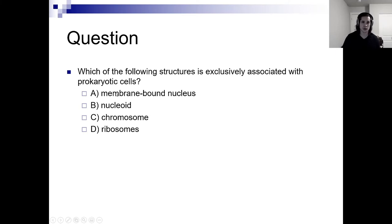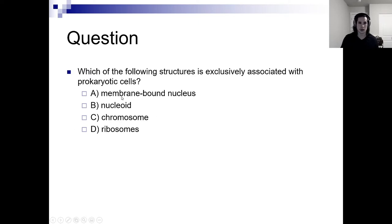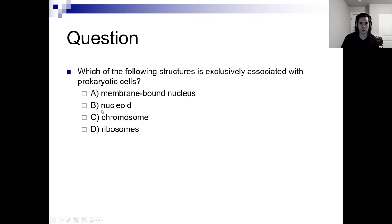Which of the following structures is exclusively associated with prokaryotic cells? Nucleoid — they're going to have chromosomes, they're going to have ribosomes, and they're not going to have a membrane-bound nucleus. What makes nucleoid the correct answer is that it's exclusively associated with prokaryotic cells. Eukaryotes have chromosomes and ribosomes as well, but they don't have a nucleoid region.